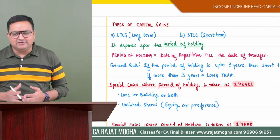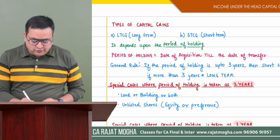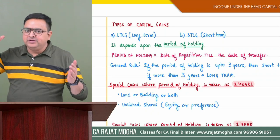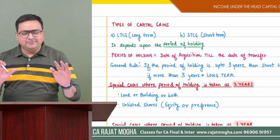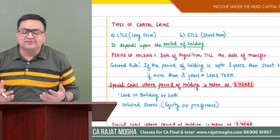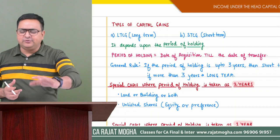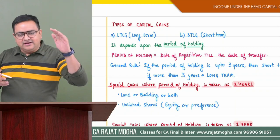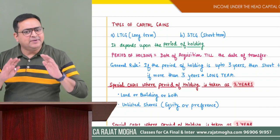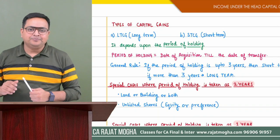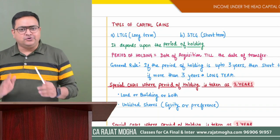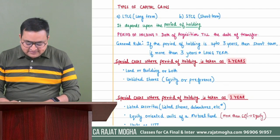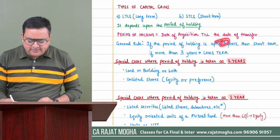There are two types of capital gain: long term and short term. It depends on the holding period — the period from the date of acquisition to the date of transfer. Generally, if this holding period is more than three years, long term capital gain will arise. If the asset is transferred within three years or exactly at three years, it is short term. There are exceptions where only one year or two years applies.